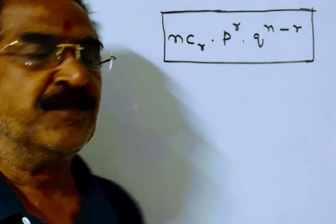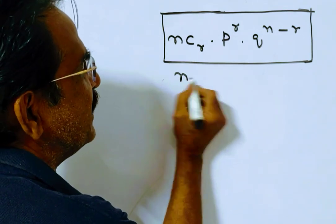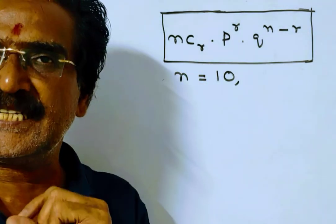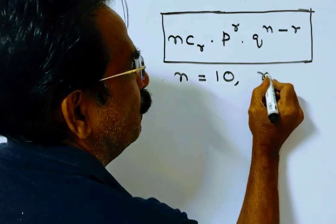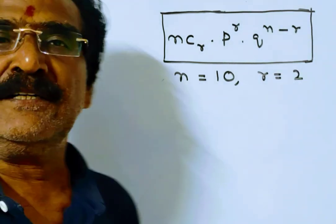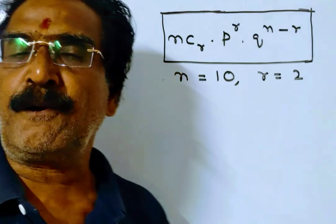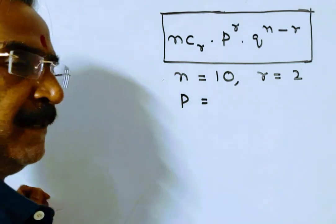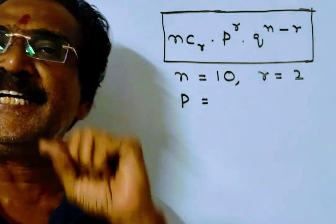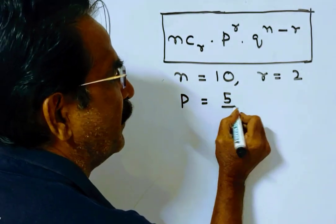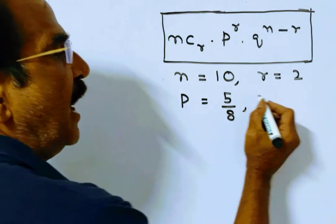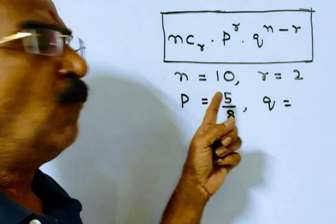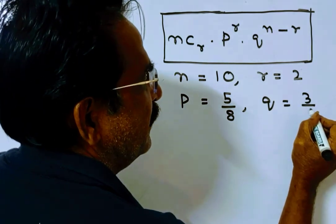So here, n is equal to 10 (total number of tries), r is equal to 2 (the number of times we want the target to be hit), p is the probability of success — since this person hits the target 5 times out of 8 shots, p equals 5/8 — and q, the probability of failure, is 1 minus 5/8, which equals 3/8.